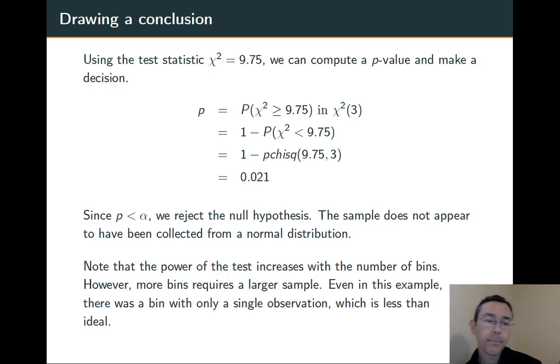One last comment. We'll have greater power in our test if we use a greater number of bins. However, as you increase the number of bins for a fixed sample size, that's going to decrease the expected size of the sample in each bin. So you're limited in how many bins you can pick. Even here, dividing the sample into six bins, I ended up with one bin that had only a single value, which is less than ideal.